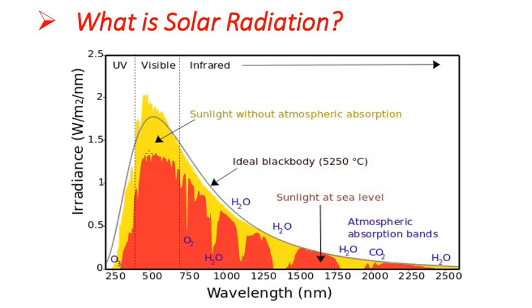In this figure, the yellow portion describes sunlight without atmospheric absorption, where absorption is assumed zero. The red portion shows actual atmospheric absorption bands, representing solar radiation after atmospheric absorption. The black line represents an ideal black body at a temperature of 5250 degrees Celsius. This is the complete solar radiation spectrum shown as irradiance versus wavelength.